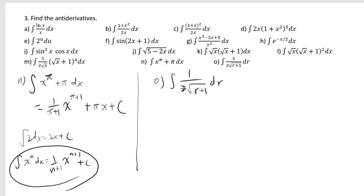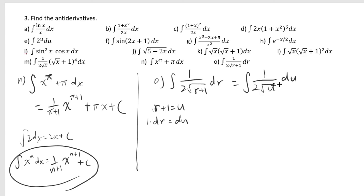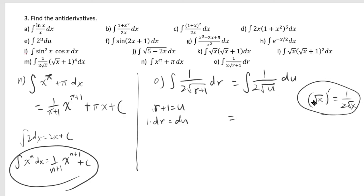For the final problem, you have the integral of 1 over 2 radical of r plus 1 dr. Set u equal to r plus 1, so the derivative of r plus 1 is 1, meaning dr equals du. This transforms the integral into 1 over 2 times radical u du. Using the formula that the derivative of square root of x is 1 over 2 radical x, the antiderivative of 1 over 2 radical u is square root of u. Substituting back, u is r plus 1, so the answer is square root of r plus 1 plus c.